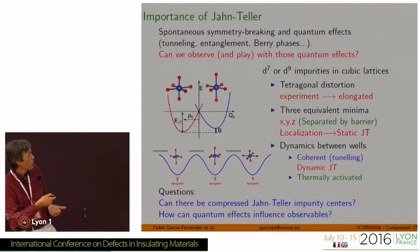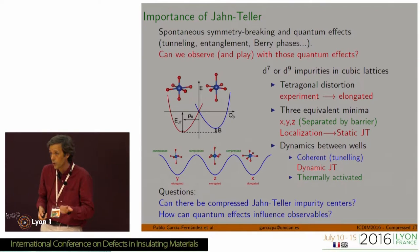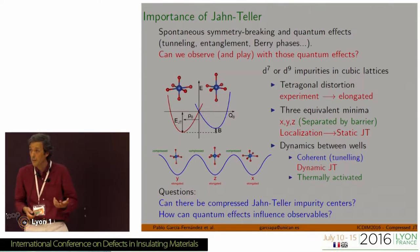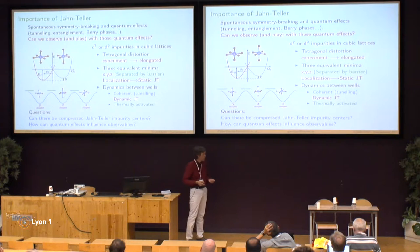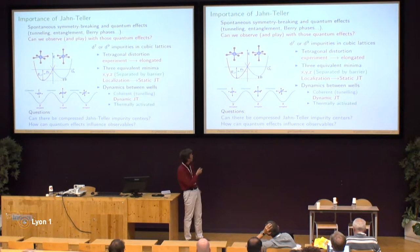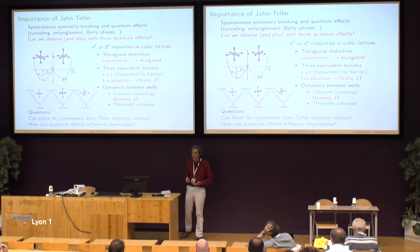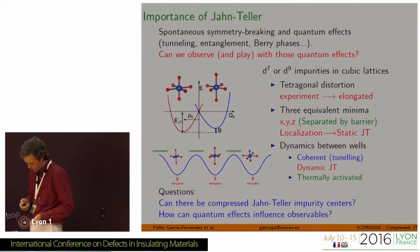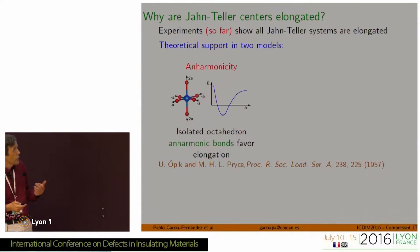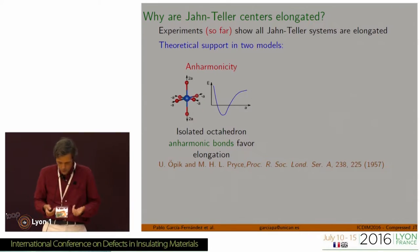So, what are the questions we want to answer in this talk? First of all, can there be compressed Jahn-Teller impurity centers, and if so, is there any experimental evidence of them? And also, how can these quantum effects influence observables — how can we see these quantum effects? Let's go and check what are the models supporting why experimentally one always observes elongated complexes.